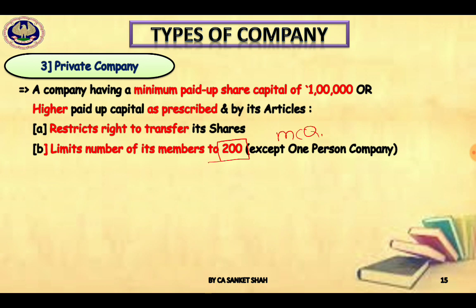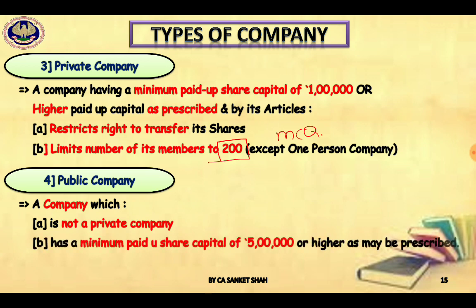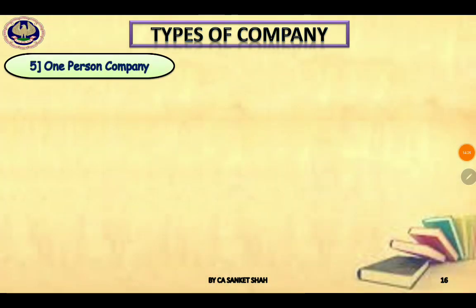Public company is a company which is not a private company, and it needs a minimum capital of rupees five lakhs. One person company is a new concept introduced in the Companies Act 2013 — previously there was no concept of one person company, but now one person can form a company. Normally minimum two members are required, but now one person can form a company.